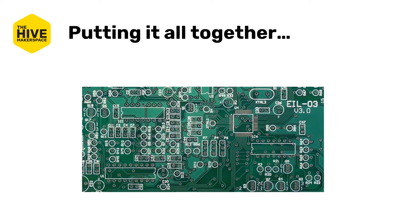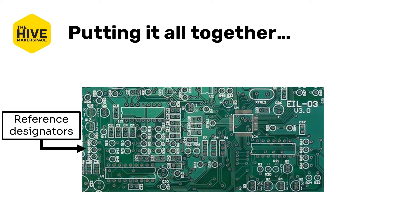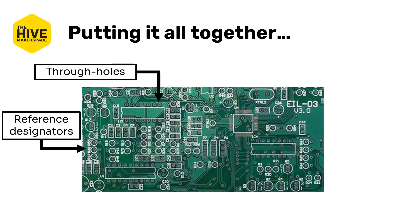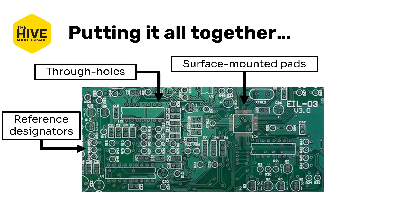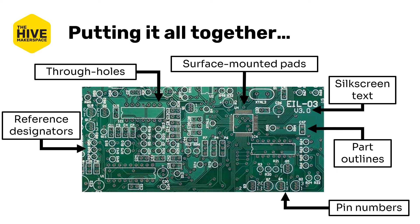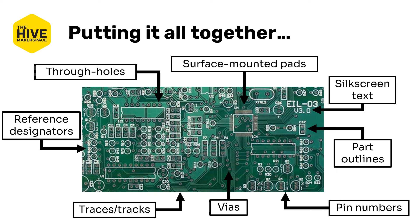Putting it all together, PCBs are commonly filled with these elements: reference designators, through holes, surface mounted pads, text, part outlines, pin numbers, vias, and traces — all being present to enable the easy assembly and use of the board.